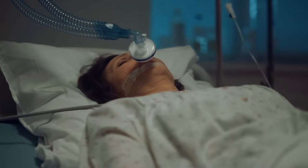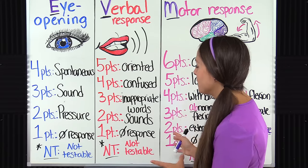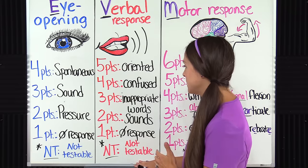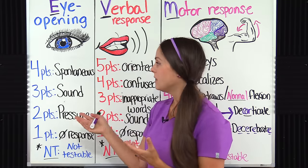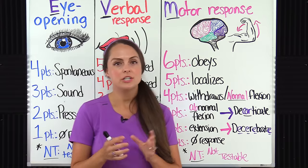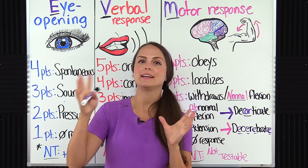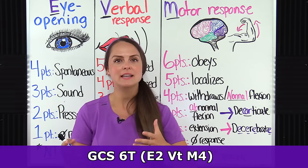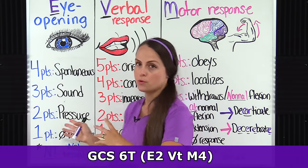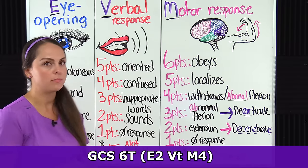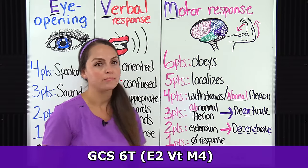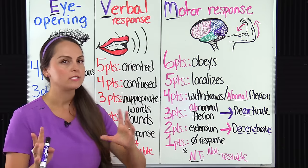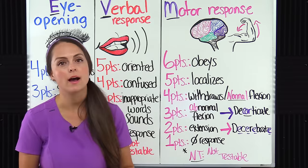For example, if our patient is intubated with a tube in their throat, we'll have great difficulty getting a verbal response. We wouldn't give them a one, because we can't test it — instead, they would have NT for not testable. So if their eye opening was a two and their motor was a four, they would have a GCS of six with a T beside it indicating they're intubated. You'd want to look at those sub-scores: E2, V-T (not testable, intubated), and M4 — giving a better idea of the patient's status and indicating the verbal response couldn't be fully assessed.